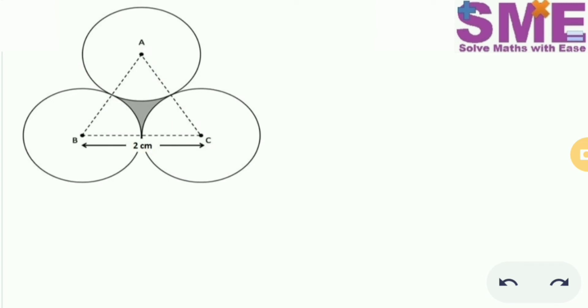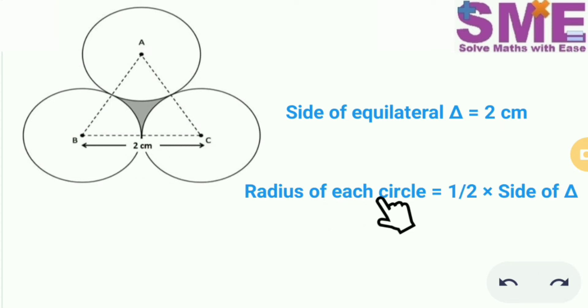It is given that the side of the equilateral triangle is 2 cm. So the radius of each circle will be equal to half of the side of this equilateral triangle. So the radius is equal to half of 2 cm, which means the radius of each circle is equal to 1 cm.